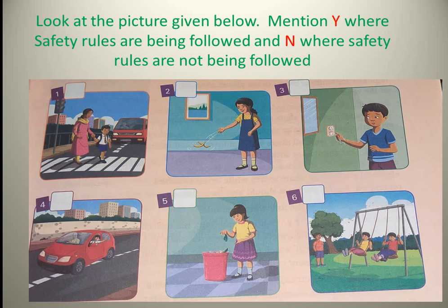In picture 1, you could see a boy holding his mother's hand crossing the road using zebra crossing — those white lines on the road. In picture 2, you could see a girl throwing a banana peel on the ground. In picture 3, a boy is touching the switch with wet hands. Picture 4 shows a boy looking out of a car window. In picture 5, a girl is throwing garbage in the dustbin. And in picture 6, children are enjoying swings in the park.